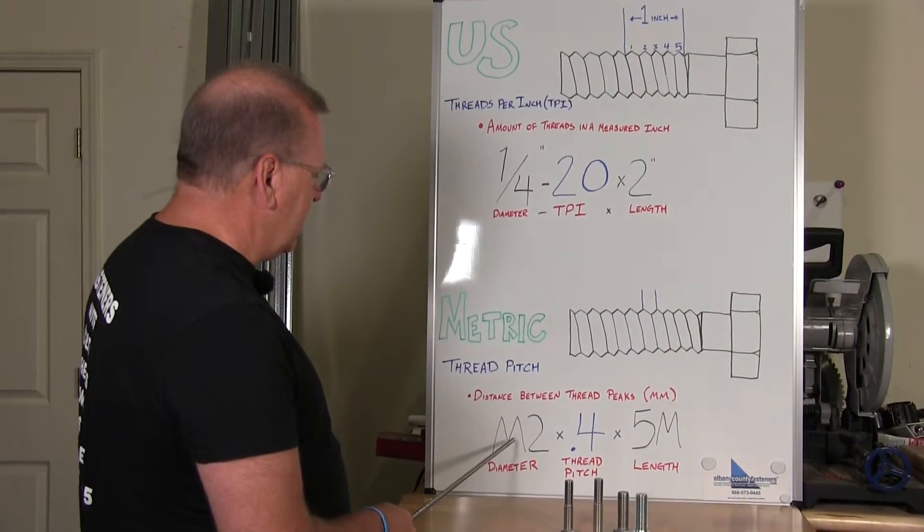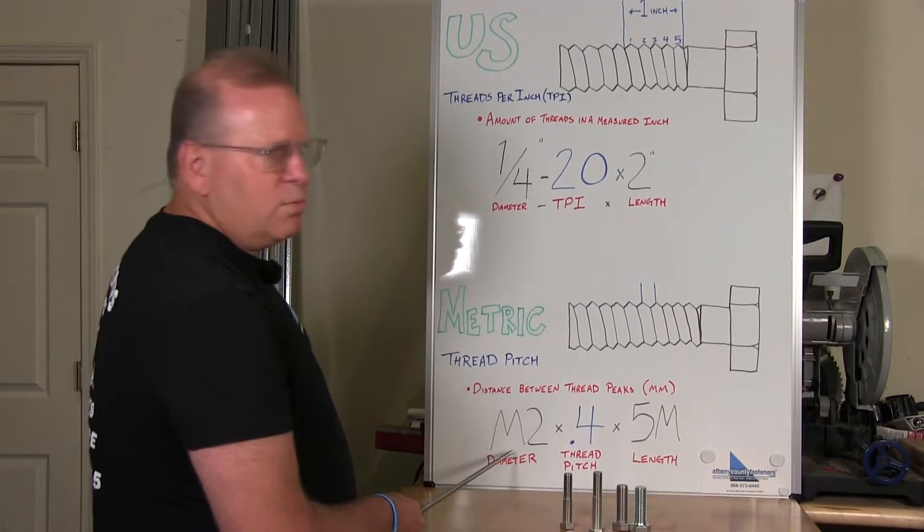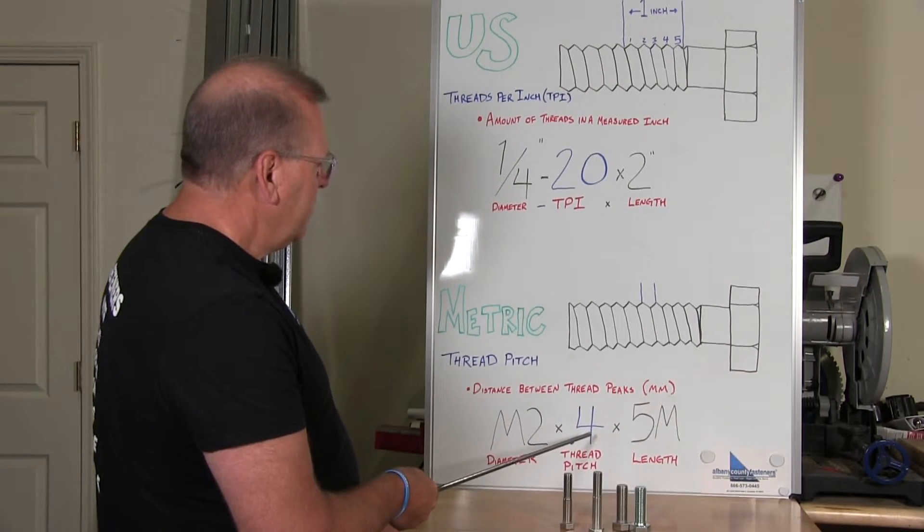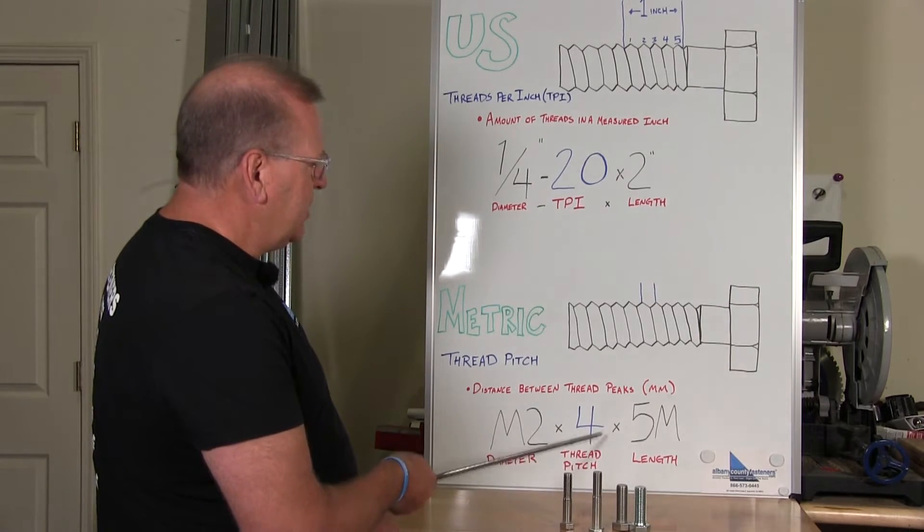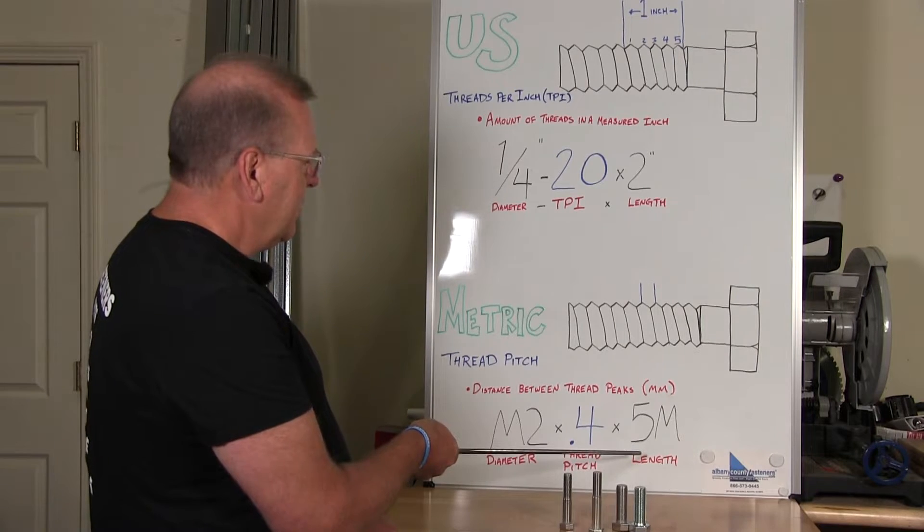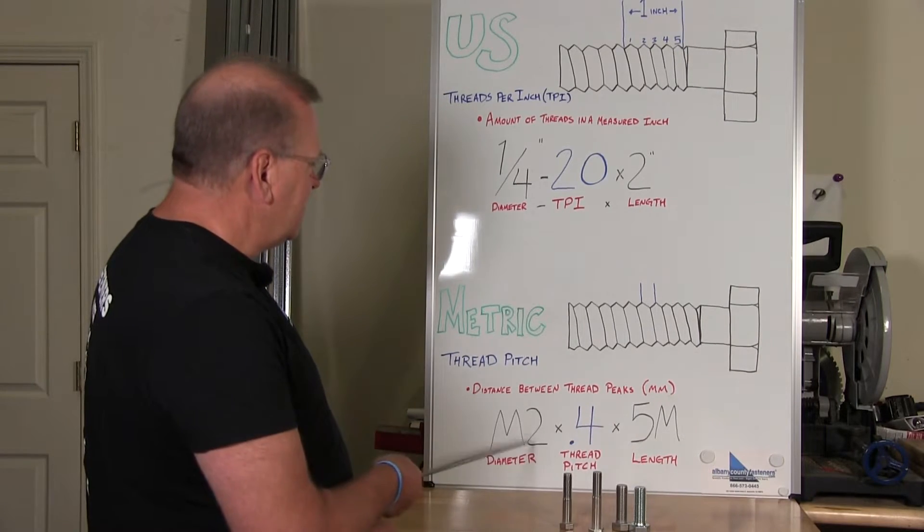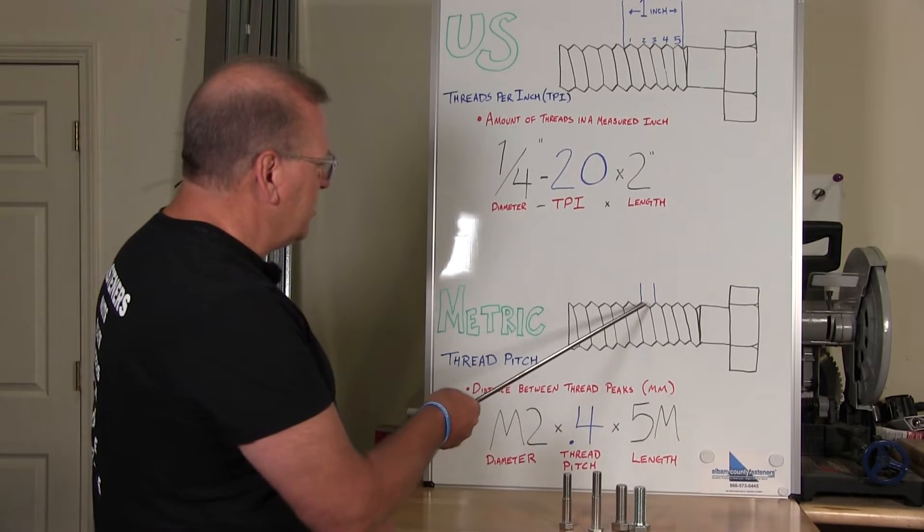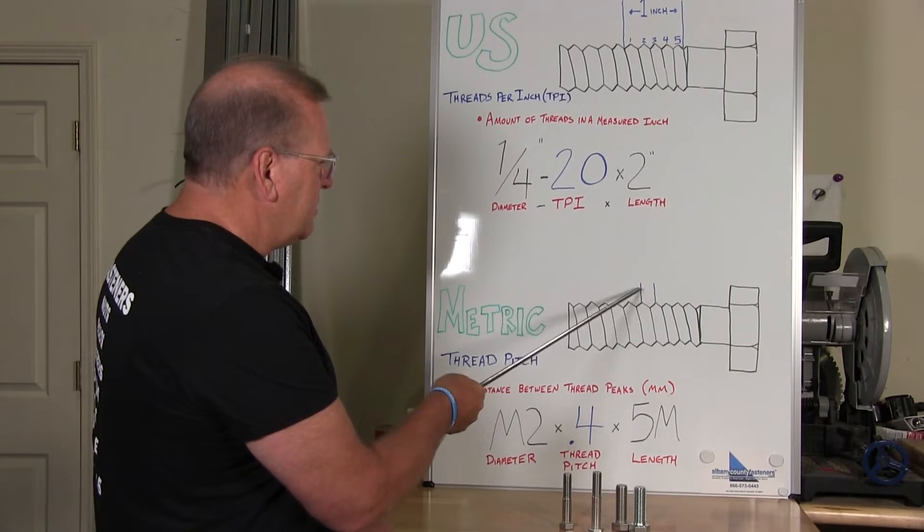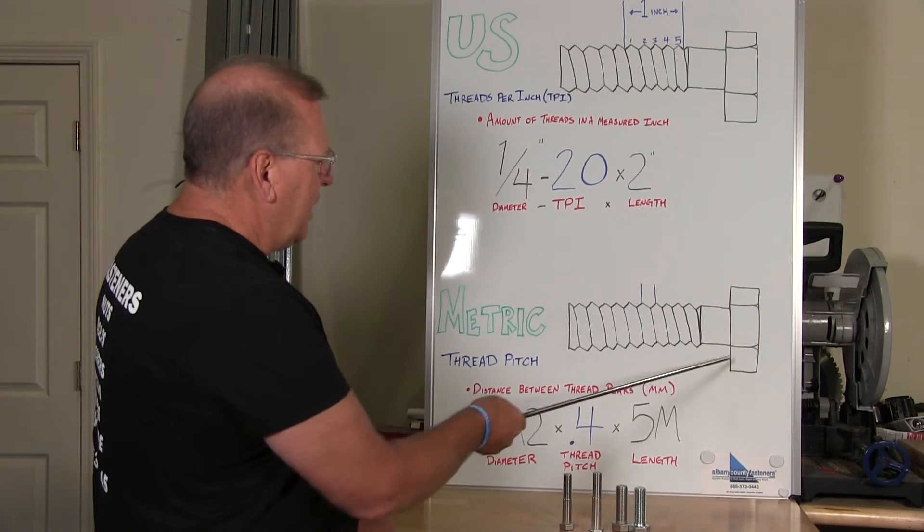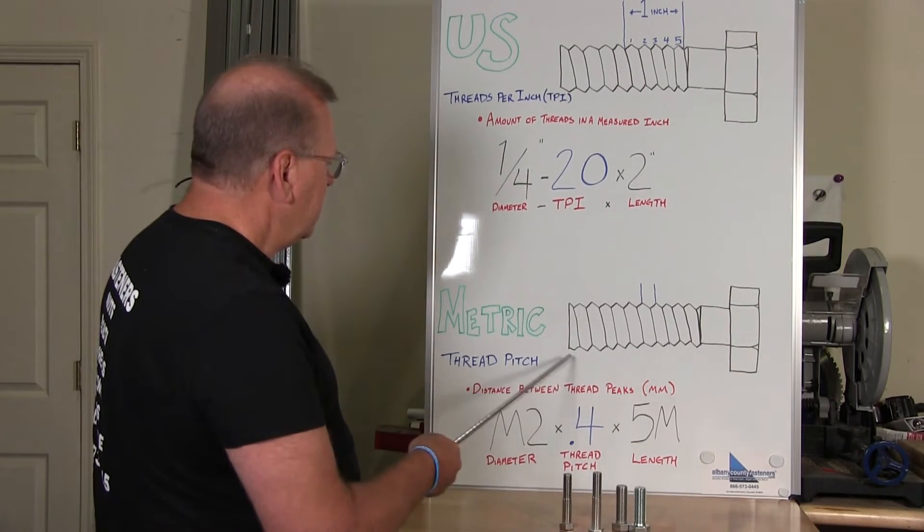When you read this and it says M2 which is the diameter, point four is the thread pitch, and five millimeter is the length. So in other words, diameter, this is the thread pitch which is the two high points, the distance between, and then the length is again from under the head to the end.